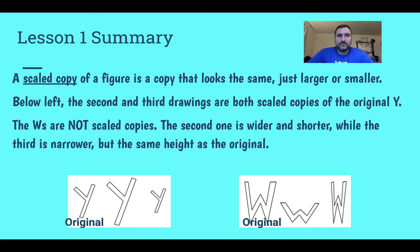In this lesson, we just talked about that a scale copy is a figure that looks exactly the same, just larger or smaller. Now, on the left, all three Ys are scale copies of that original, or the original is a scale copy of the others. The Ws, on the other hand, are not scale copies. The second one is wider and shorter. The third one is narrower, but it's the same. Scale copies should look the same, just larger or smaller.